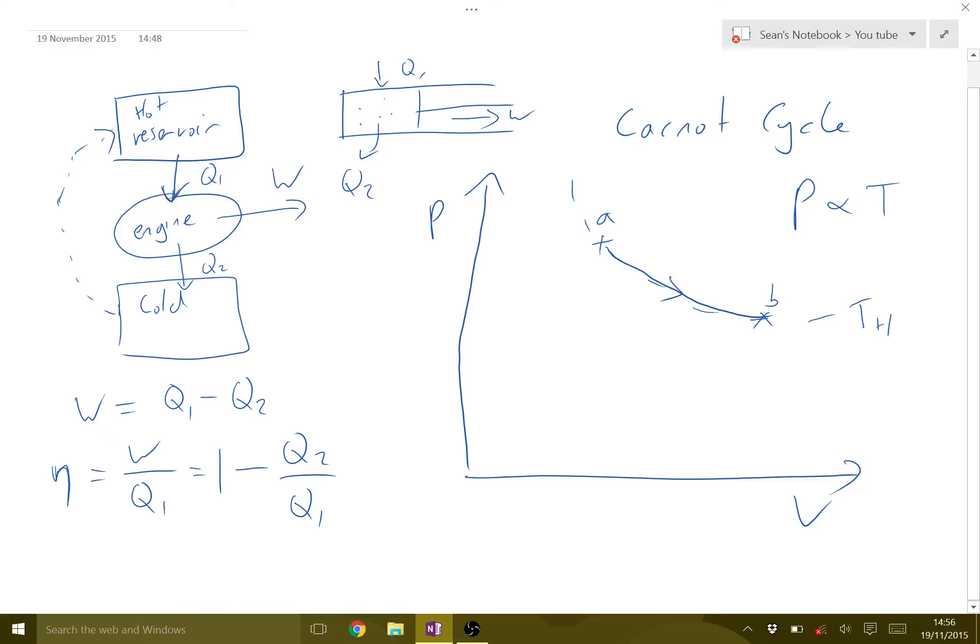So from A to B, we're getting our Q1, our heat energy is coming in. And also, because we are expanding, our volume is increasing. You can imagine in this piston, the volume is increasing. We are doing work. Our useful work is being done in this process.